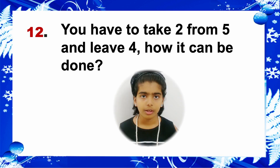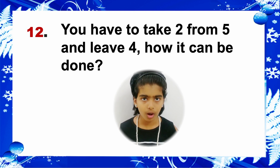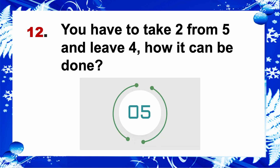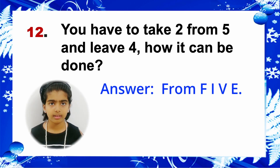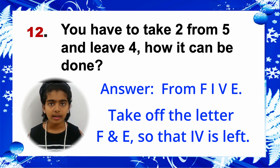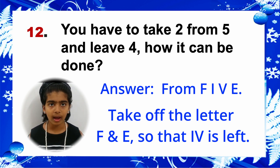Riddle 12: You have to take 2 from 5 and leave 4. How can it be done? Answer: From 'five', take off the letters F and E, so that '4' is left.